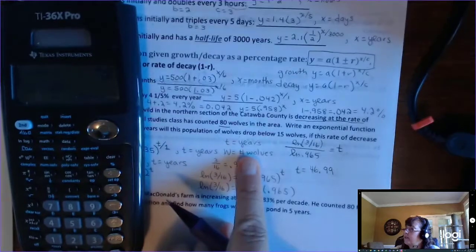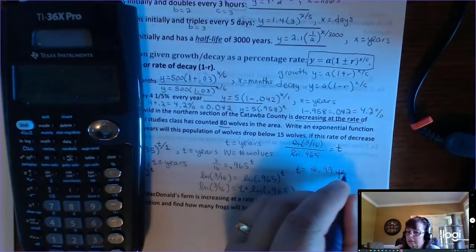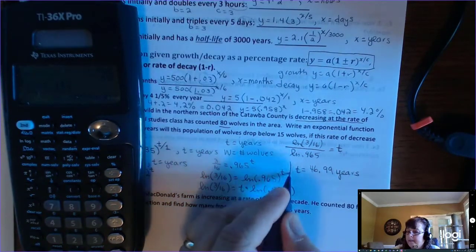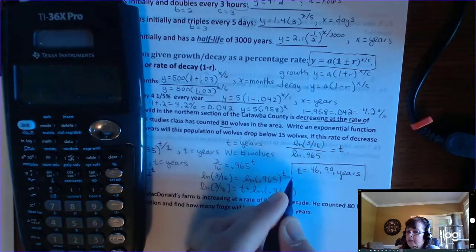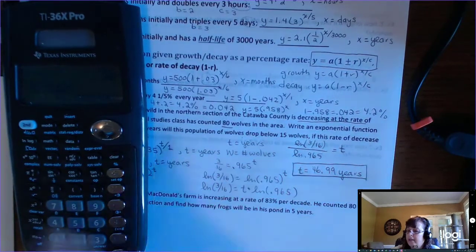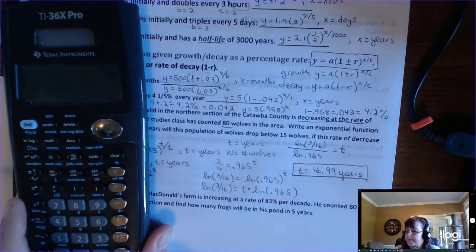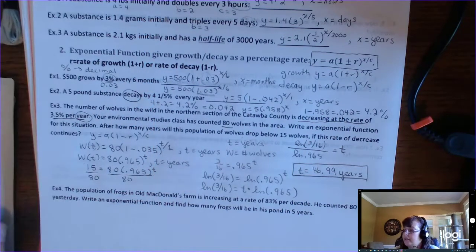So you see we get 46.985. If I round that to the hundredths place, that's 46.99. And then we look at years, t's in years. So if I say round to the hundredths place, you have to be good at doing that. Don't round up to 47.